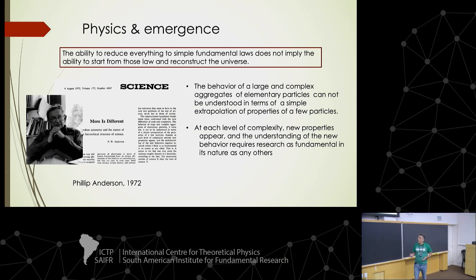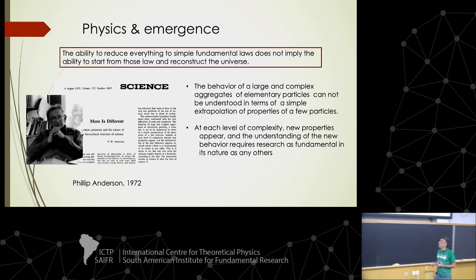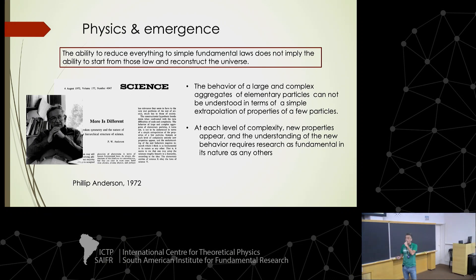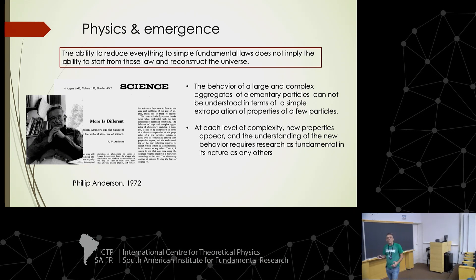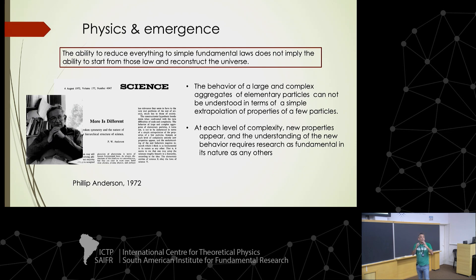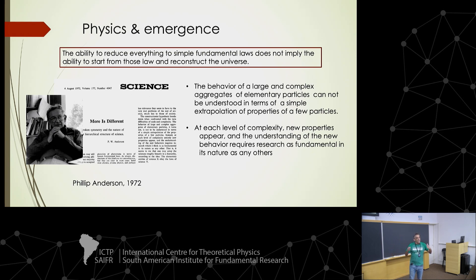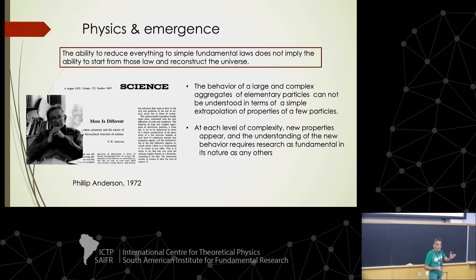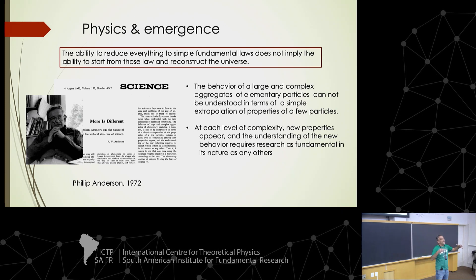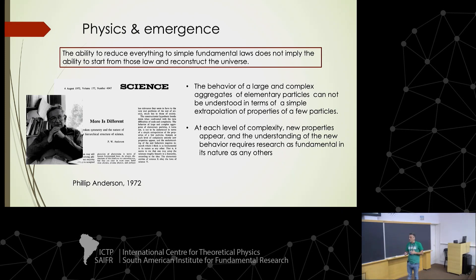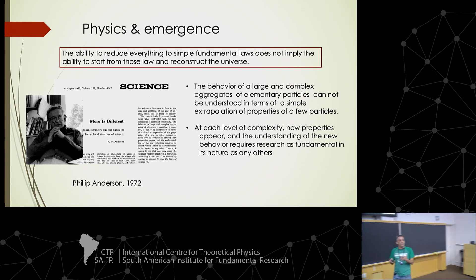One of the pioneer articles highlighting the importance of complex systems was due to Philip Anderson, who published in 1972 in Science the concept of physics and emergence. He said that the behavior of a large and complex aggregate of elementary particles cannot be understood in terms of the extrapolation of the behavior of its components. At each level of complexity, new properties appear and new physics appear.